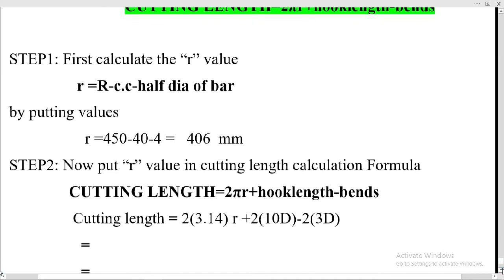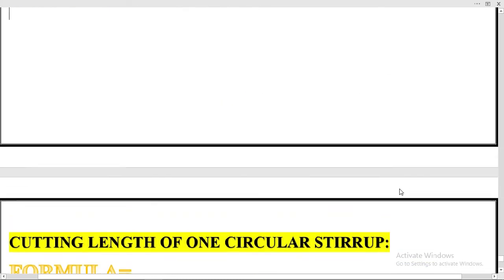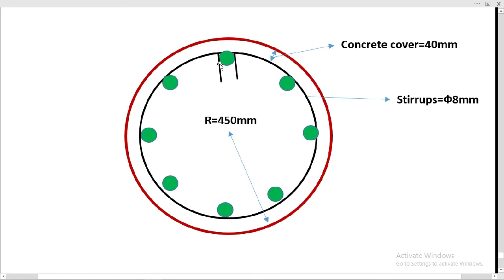Now let's calculate the cutting length of one bar. The formula is: cutting length = 2πr + hook length − bends. For hook length we use the formula 10d, and since we are providing two hooks in one circular stirrup, we multiply by 2. There are also two 135-degree bends — one for each hook — and the 135-degree bend formula is 3d. So we add 2×10d for hooks and subtract 2×3d for bends.